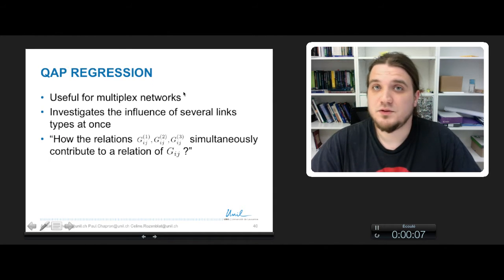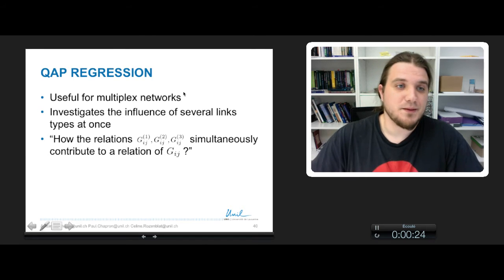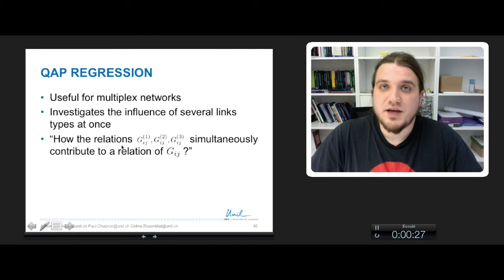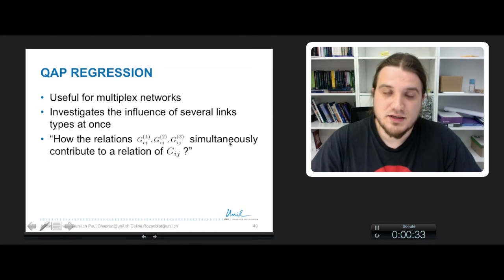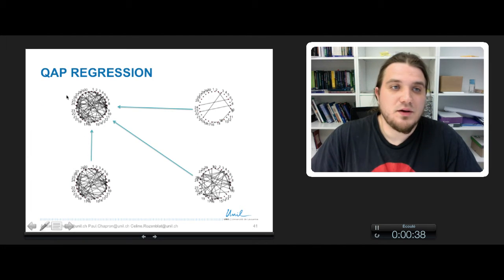Regression is useful when you've got multiplex networks with different types of links between nodes of a graph. It allows you to investigate the influence of several relation types at once. So basically the research question you can ask is how the relation contained in three different graphs may affect simultaneously a fourth graph. Graphically this means having this graph and trying to see if the links of this graph, this graph and this graph may affect the presence of links between the nodes of this graph.